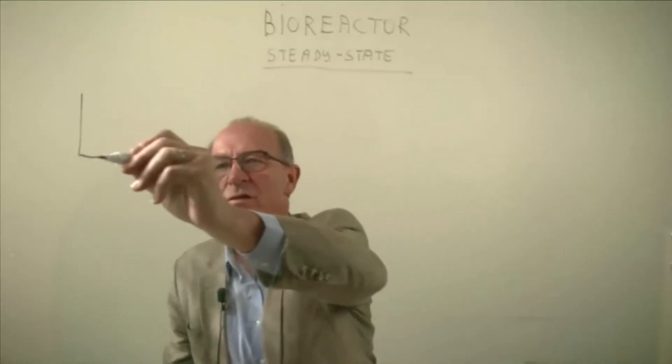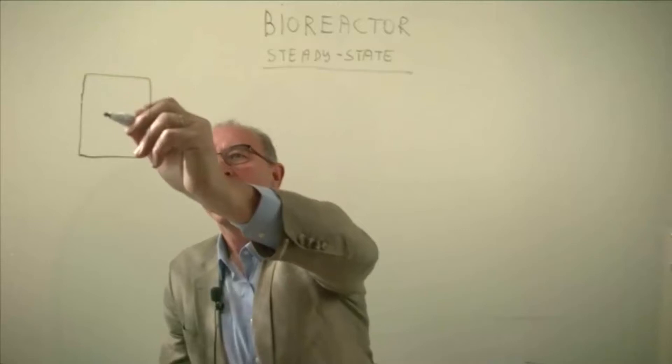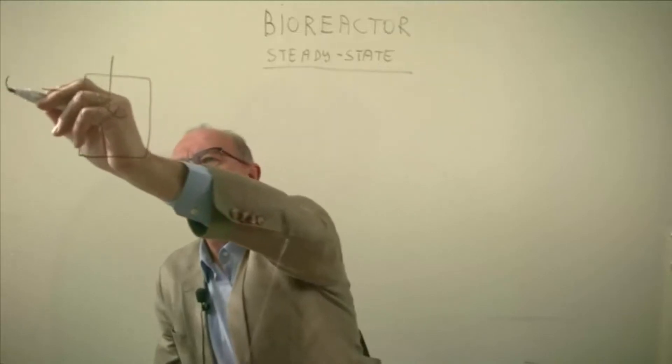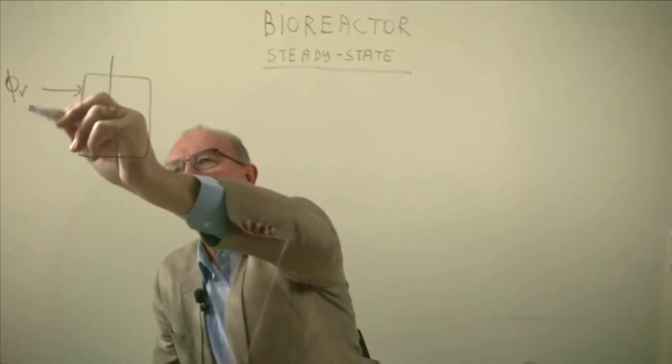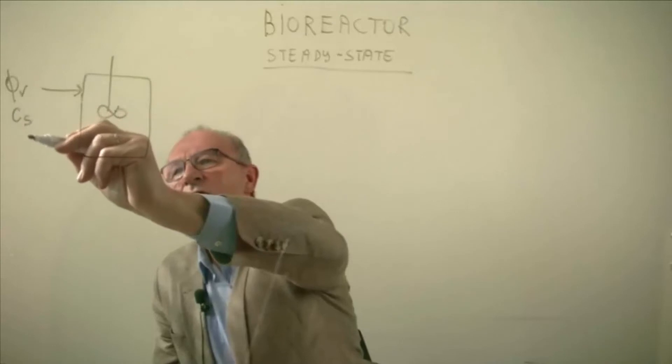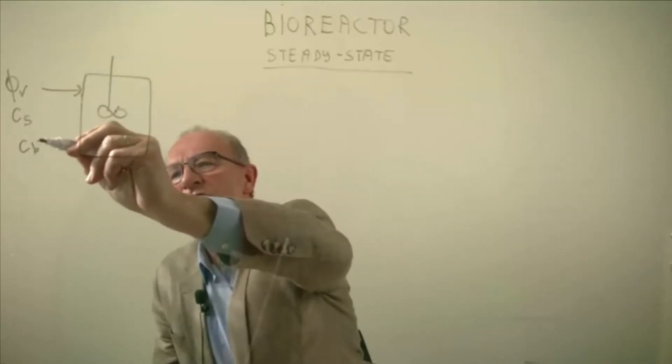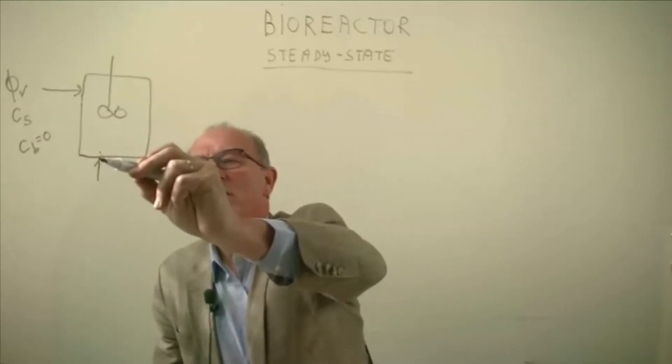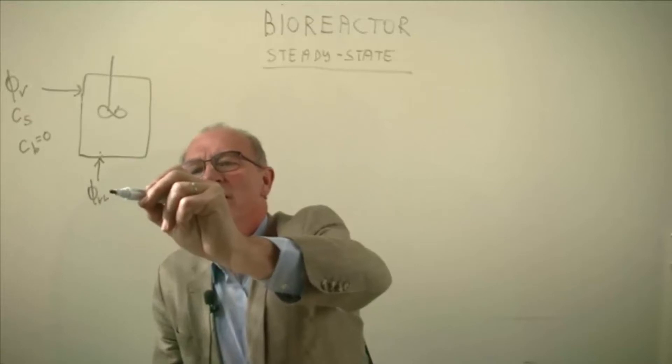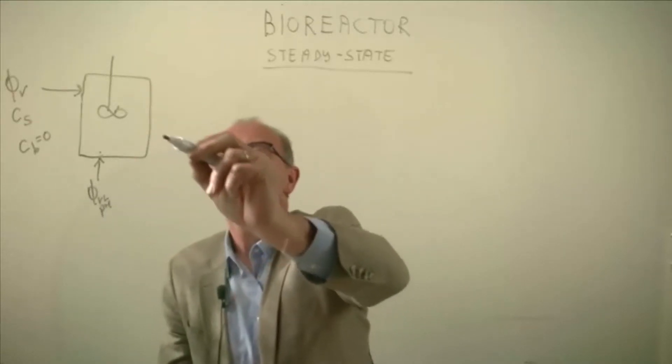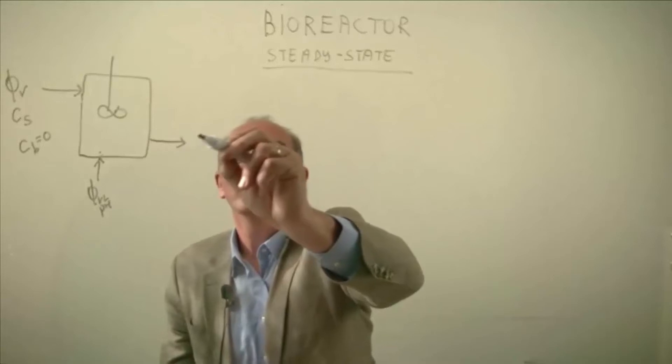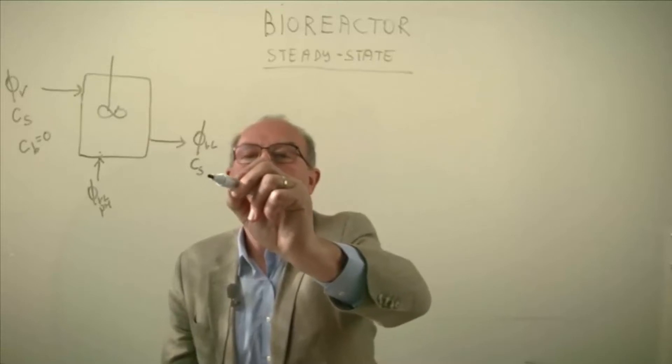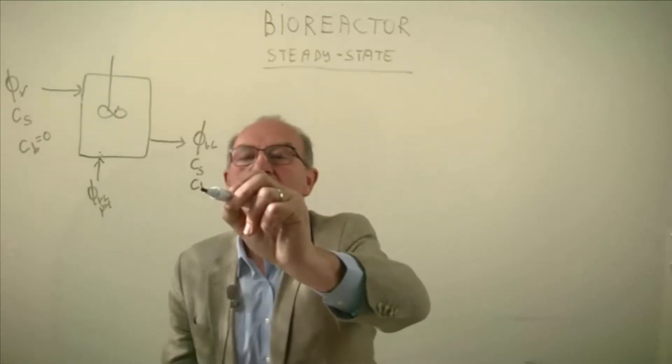Let's draw a sketch. The tank is well stirred and here we enter a certain liquid flow with a certain concentration of substrate and biomass concentration which is zero in the inlet. We also add a little bit flow rate to adjust the pH which we call the pH volume flow rate and the total volume flow rate is leaving here the bioreactor and contains a certain concentration of substrate and a certain concentration of biomass.